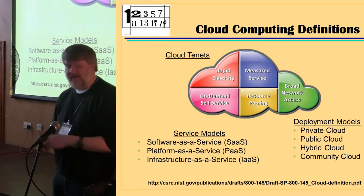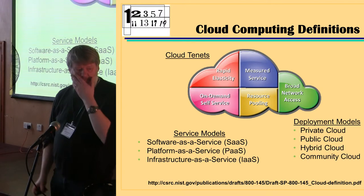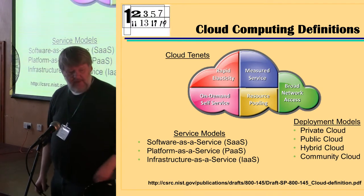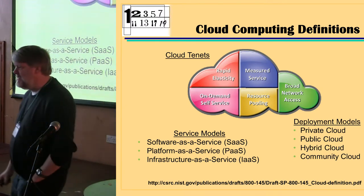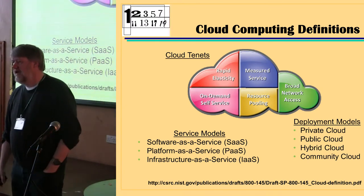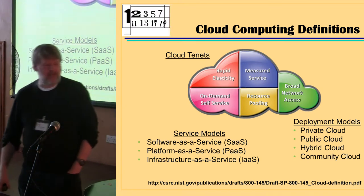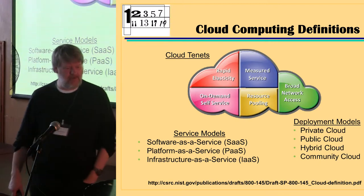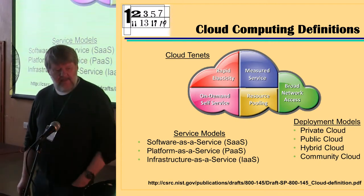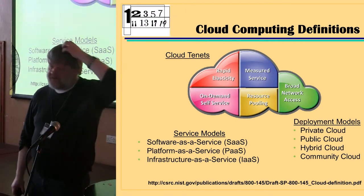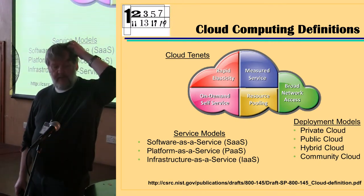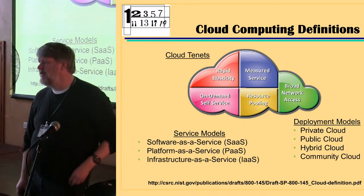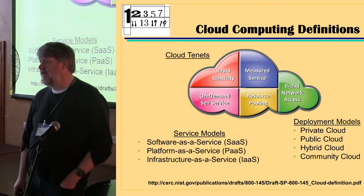I'll go through each of those in turn. We'll look at the service models: SaaS, PaaS and IaaS. There are a lot of bad puns in there. And then the four deployment models: private, public, hybrid and community clouds.